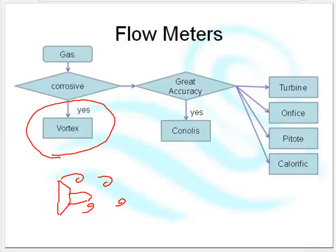In descending order of accuracy: Turbine is the most accurate. Orifice plate, Pitot tube, and Calorific. Calorific is really not that accurate, but it's cheap and it's easy to install. Pitot tubes are okay until they get blocked up, like the Air France airplane. Orifice has been around for millions of years. Turbine is very accurate, providing we haven't got any elbows nearby and we're using a flow straightener.